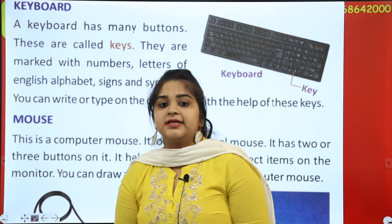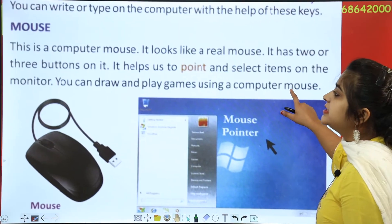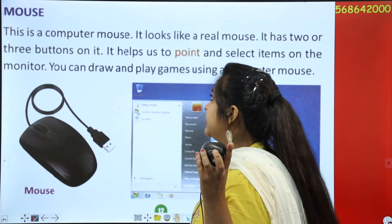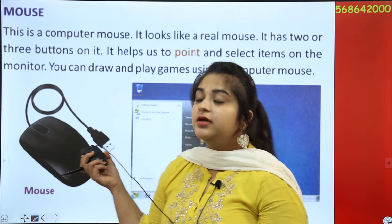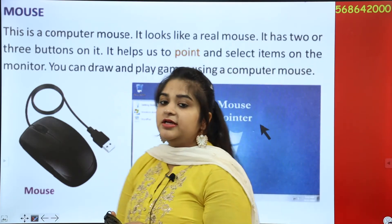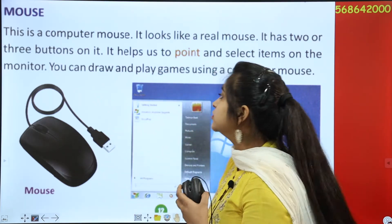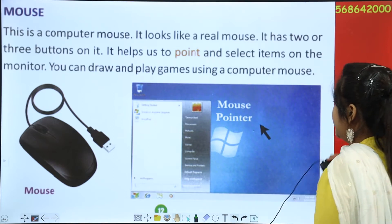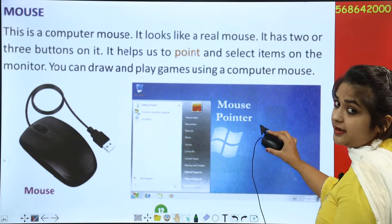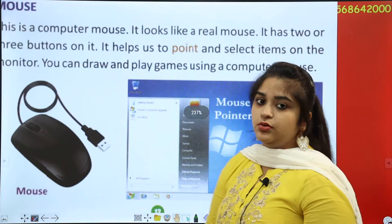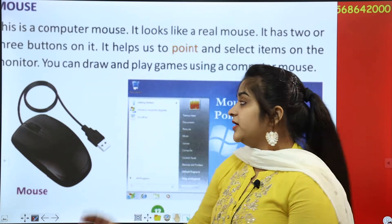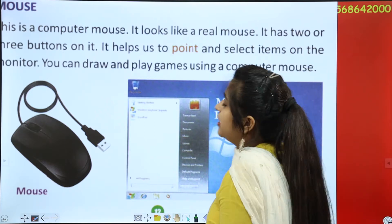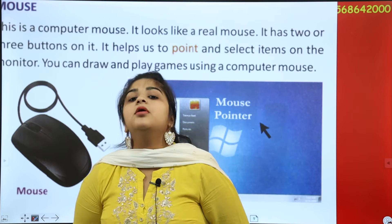Next, the third part is the Mouse. It is a small computer mouse. It looks like a real mouse and has two or three buttons on it. It helps us to point and select items on the screen. When you move the mouse, the arrow pointer on screen moves. You can draw and play games using a computer mouse.